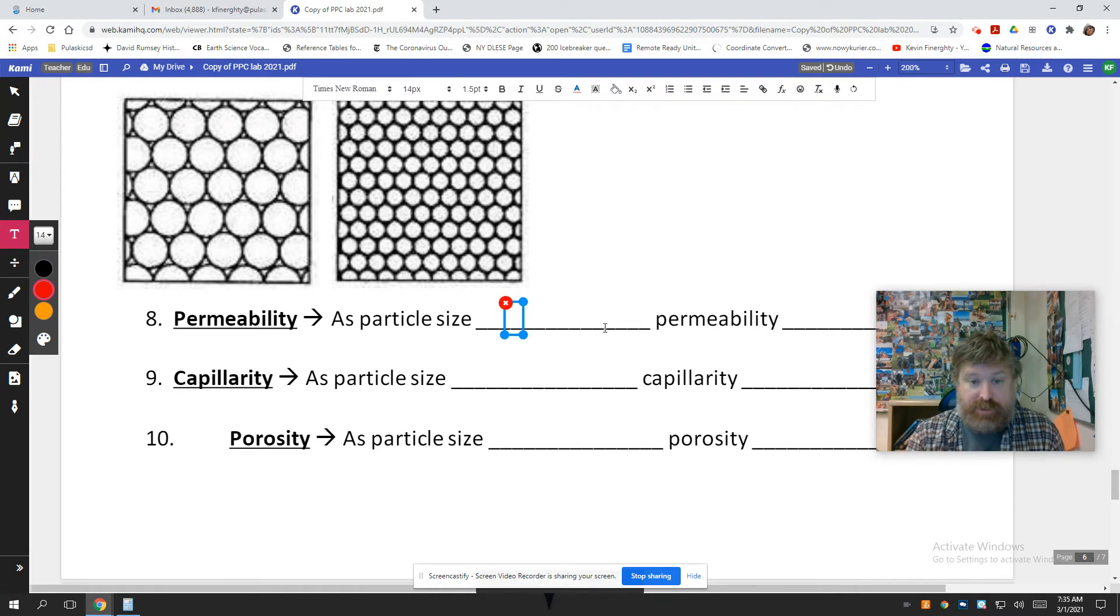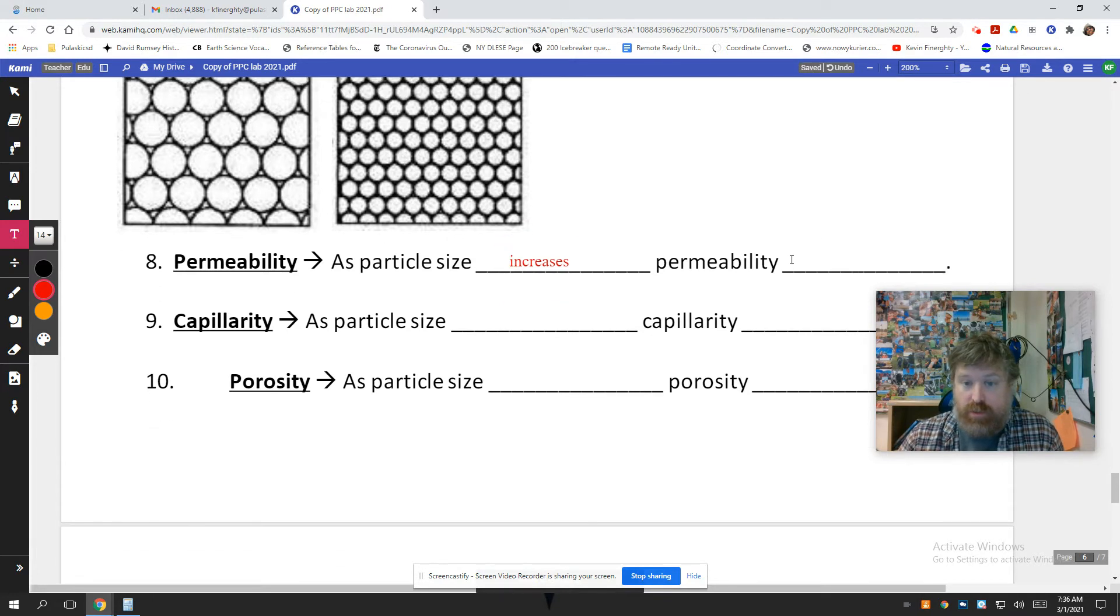Permeability. As particle size increases. This is how quickly water goes through. So if you have bigger holes and less of them, the water can go through faster. So as it increases, permeability increases. What we call a direct relationship. As one thing goes up, the other thing goes up.